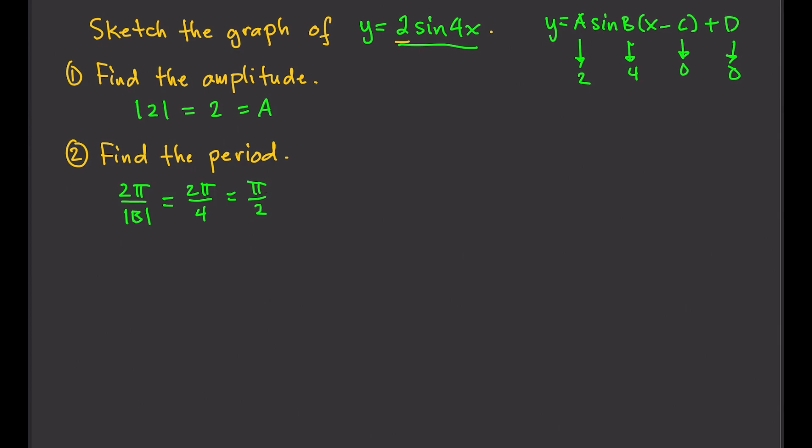That's π over 2. That's the length of one period. So, if we start from 0, then 0 to π/2 will give us one period of the function. We can have from 0 to π/2 as one period.